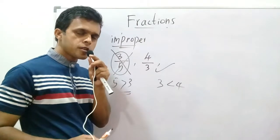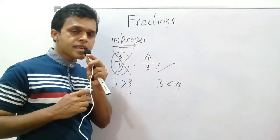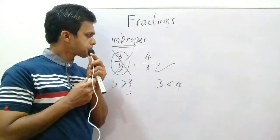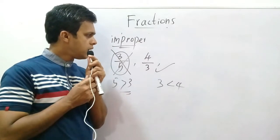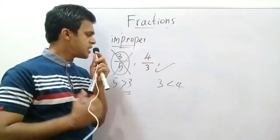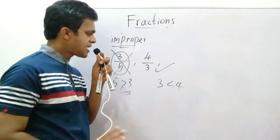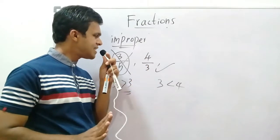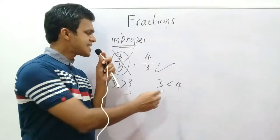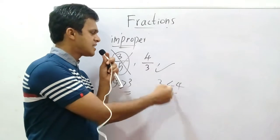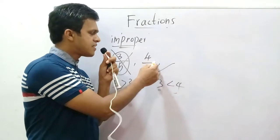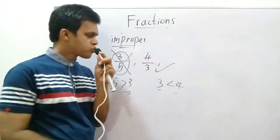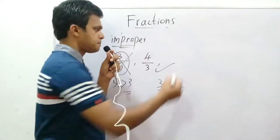An improper fraction means a fraction where the digit in the denominator is less than the digit in the numerator. So that is an improper fraction.